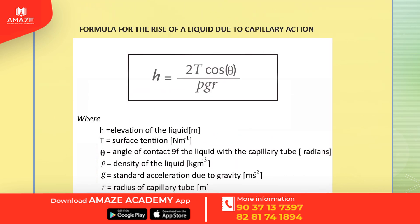The formula for the rise of a liquid due to capillary action: h is the elevation of the liquid in meters, T is the surface tension in Newton per meter, theta is the angle of contact of the liquid with the capillary tube expressed in radians, rho is the density of the liquid in kilogram per meter cube, g is the standard acceleration due to gravity in meter per second square, and R is the radius of the capillary tube in meters.